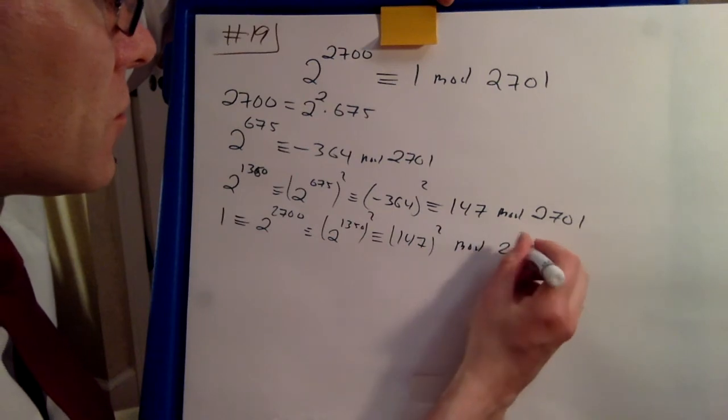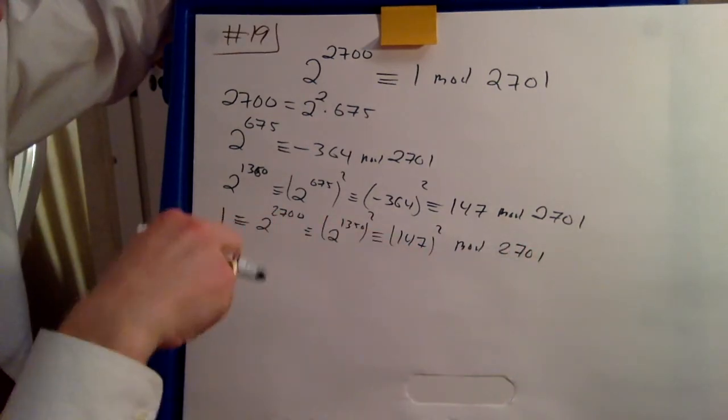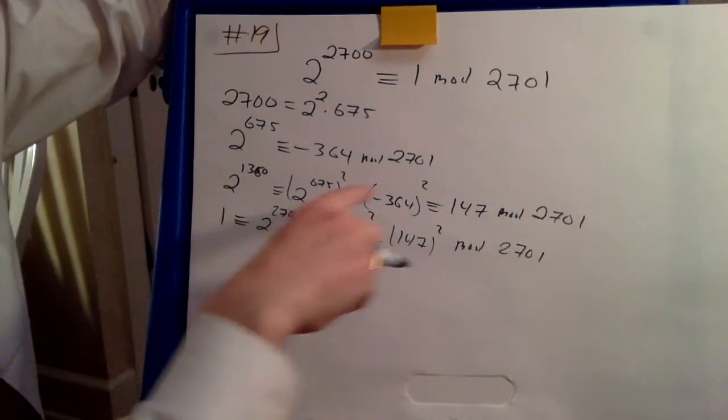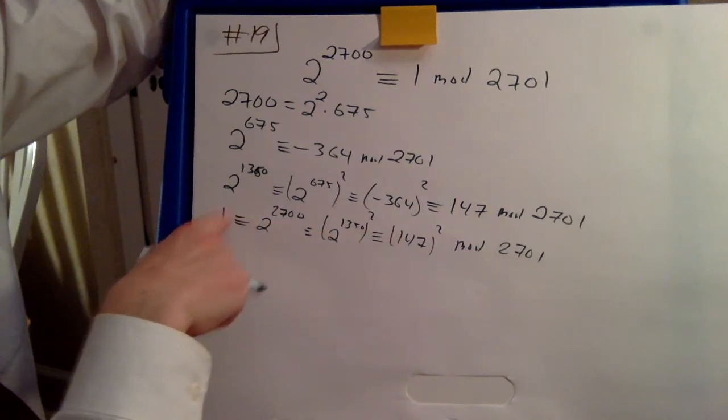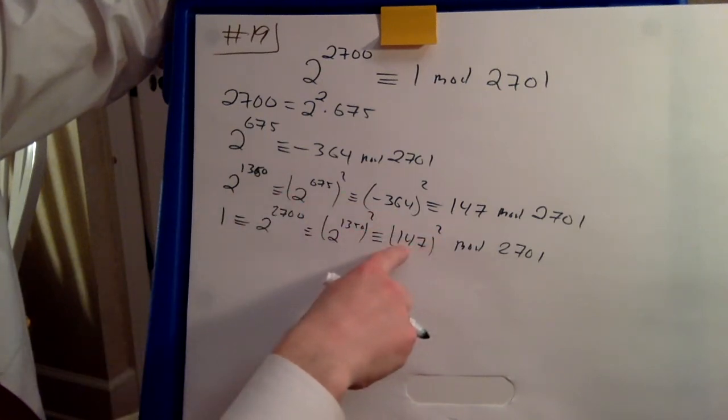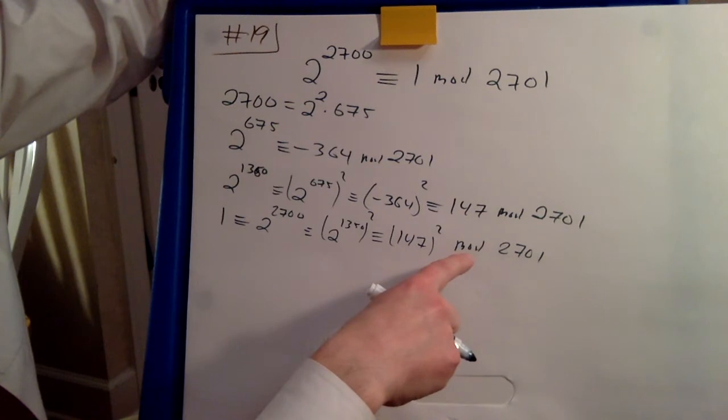And now you realize, wait a moment. 1 is equal to the square of 147 mod 2071. You realize, aha, that's a strange square root of one.